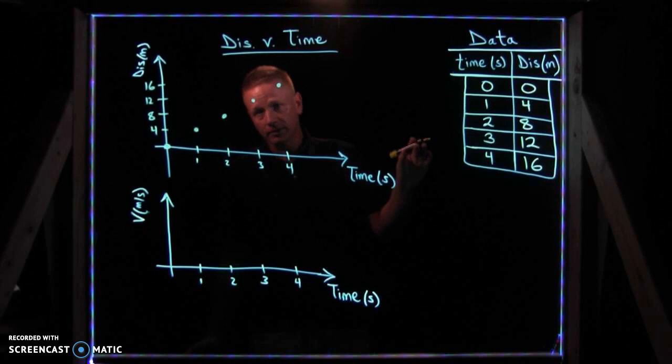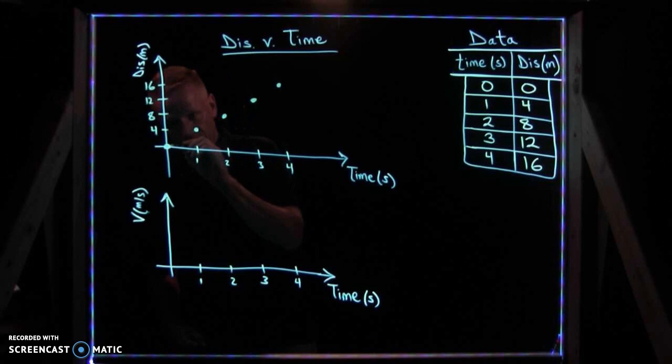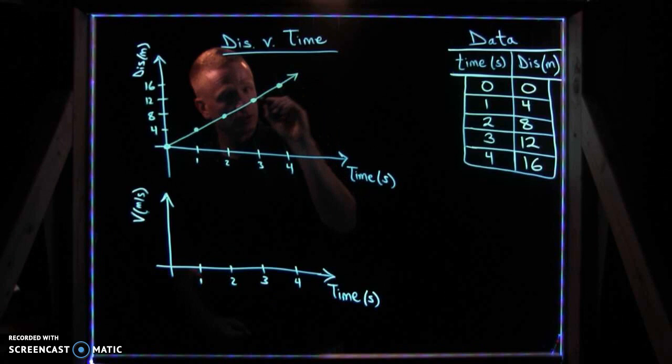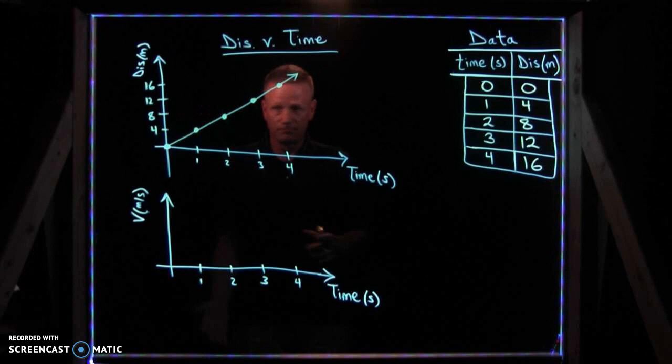And the first obvious pattern looking at the points is that they're collinear. And if they're collinear, that means there is a line that will pass through them, a line of best fit if you will. And if you examine the slope of that line, you can determine the velocity at which you're moving.